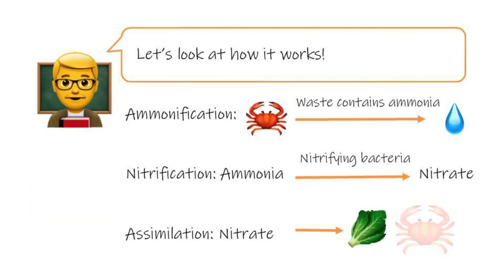Let's look at how it works. For ammonification, the crabs excrete waste which contains ammonia into the water. With nitrification, bacteria convert ammonia to nitrite and further convert it to nitrate. After ammonia is converted to nitrate, plants absorb it in assimilation. As a result, nitrogen compounds, which are toxic to fish, are converted to nutrients that help the plants to grow.